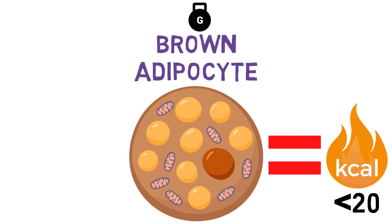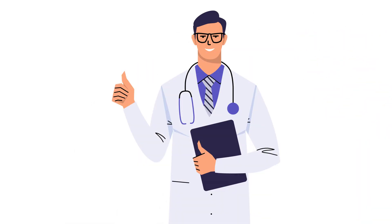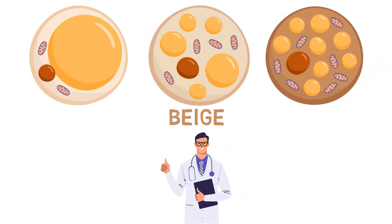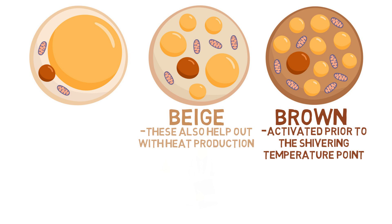However, researchers have proposed that there could be an opportunity for increased calorie burning via the last type of adipocyte: beige. These light brown adipocytes also help with heat production when the body falls below a certain temperature point, which is how they help burn calories. One of the main differences is that rather than being activated prior to the shivering temperature point, they are activated below it.